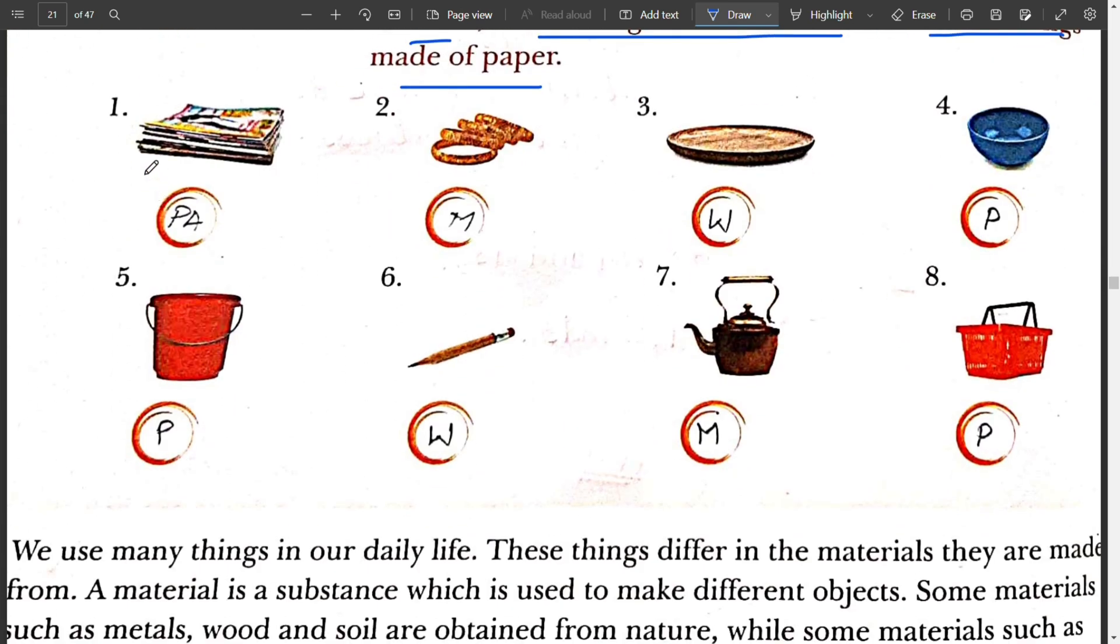Let us start. The first picture is of books. Books are made up of paper so we will write PA in the circle. Second, the picture is of bangles. These bangles are made up of gold. So gold is a metal. So I will write metals, M.